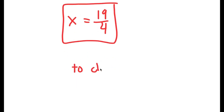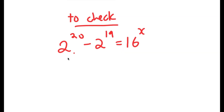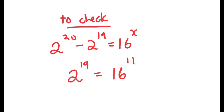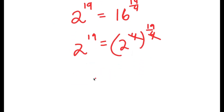To check: my original equation was 2 to the power of 20 minus 2 to the power of 19 equals 16 to the power of x. We already know 2 to the power of 20 minus 2 to the power of 19 equals 2 to the power of 19. So we get 2 to the power of 19 equals 16 to the power of 19 over 4. Since 16 equals 2 to the power of 4, I have 2 to the power of 4 to the power of 19 over 4, and the 4s cancel out, giving 2 to the power of 19 equals 2 to the power of 19. Verified.